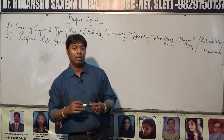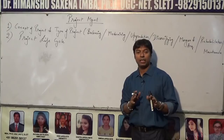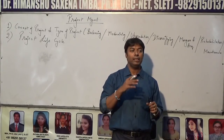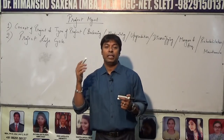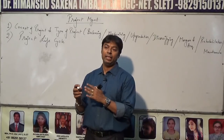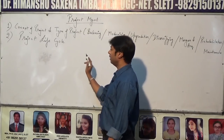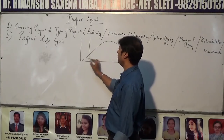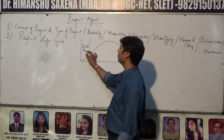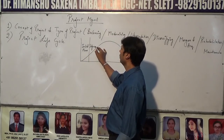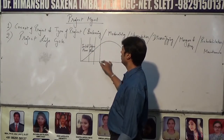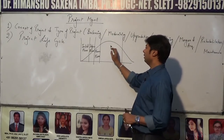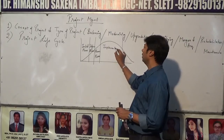Number one is the initial phase, where the initial activities take place and you identify the business opportunity. Then comes the defining phase, followed by the planning phase. If we draw the project life cycle, it starts with the initial phase, then the defining phase, then the planning phase.